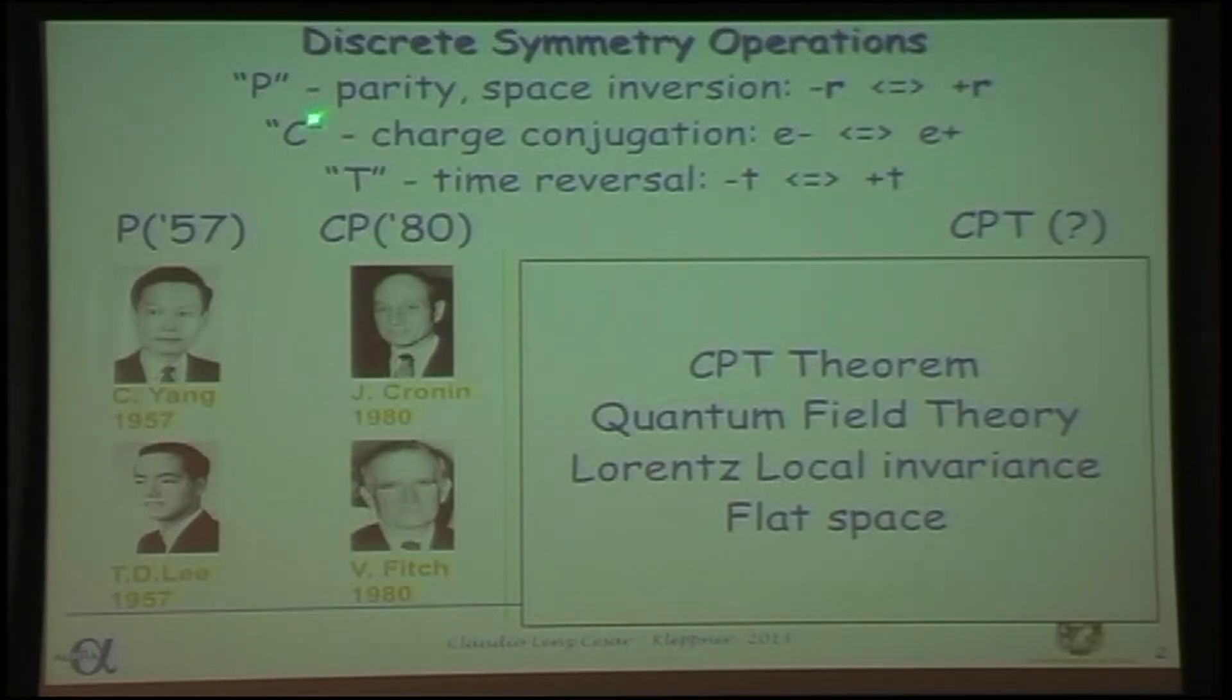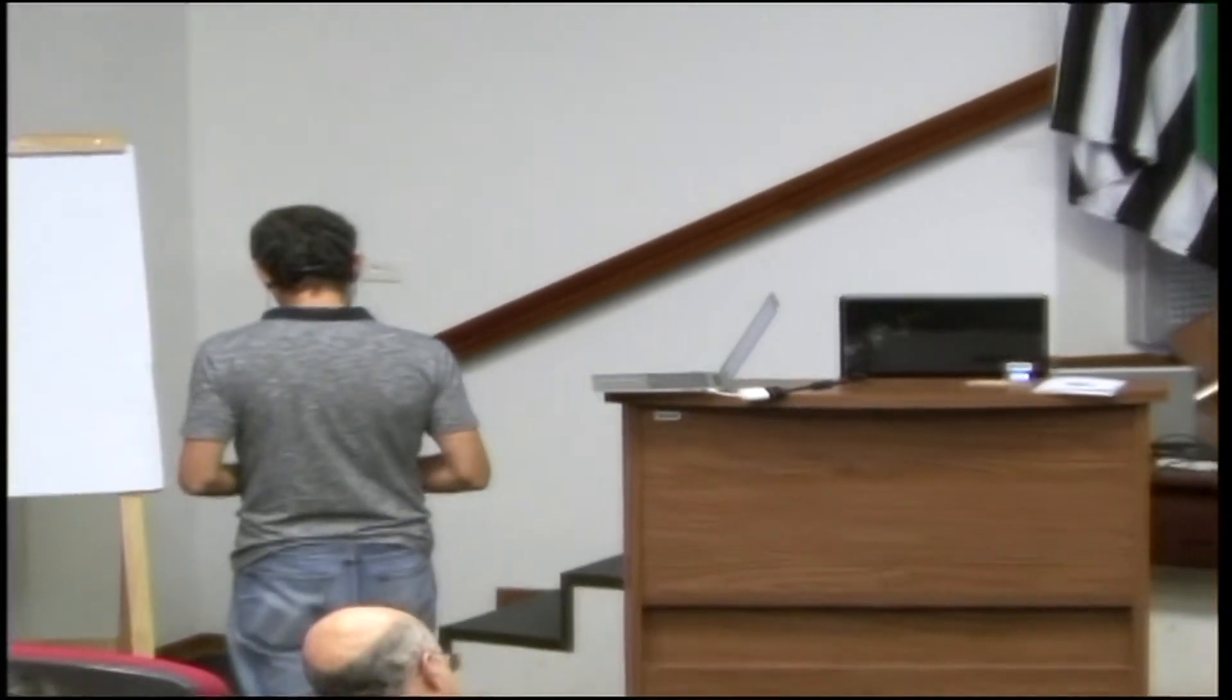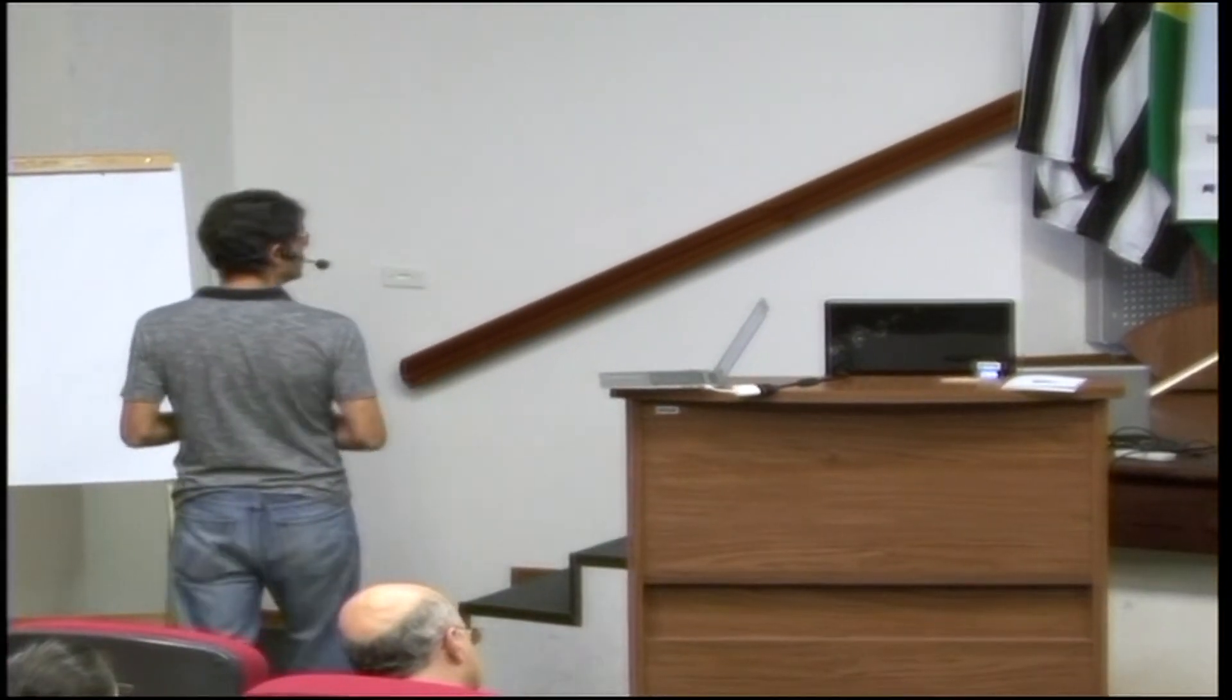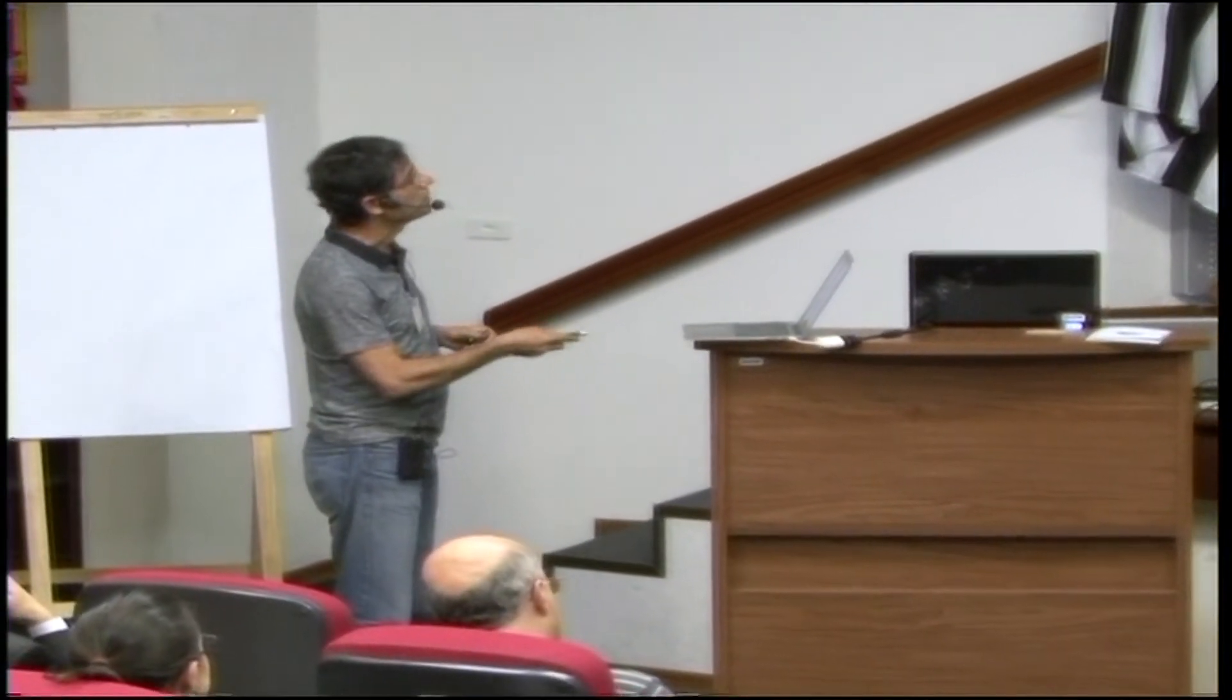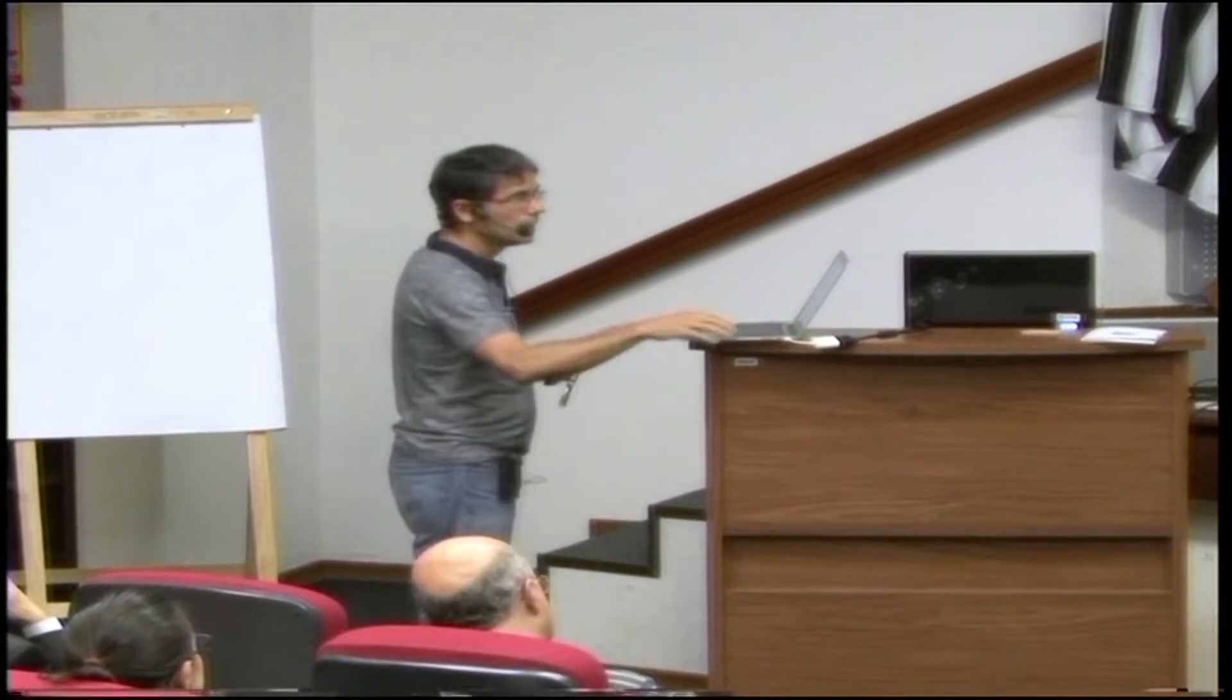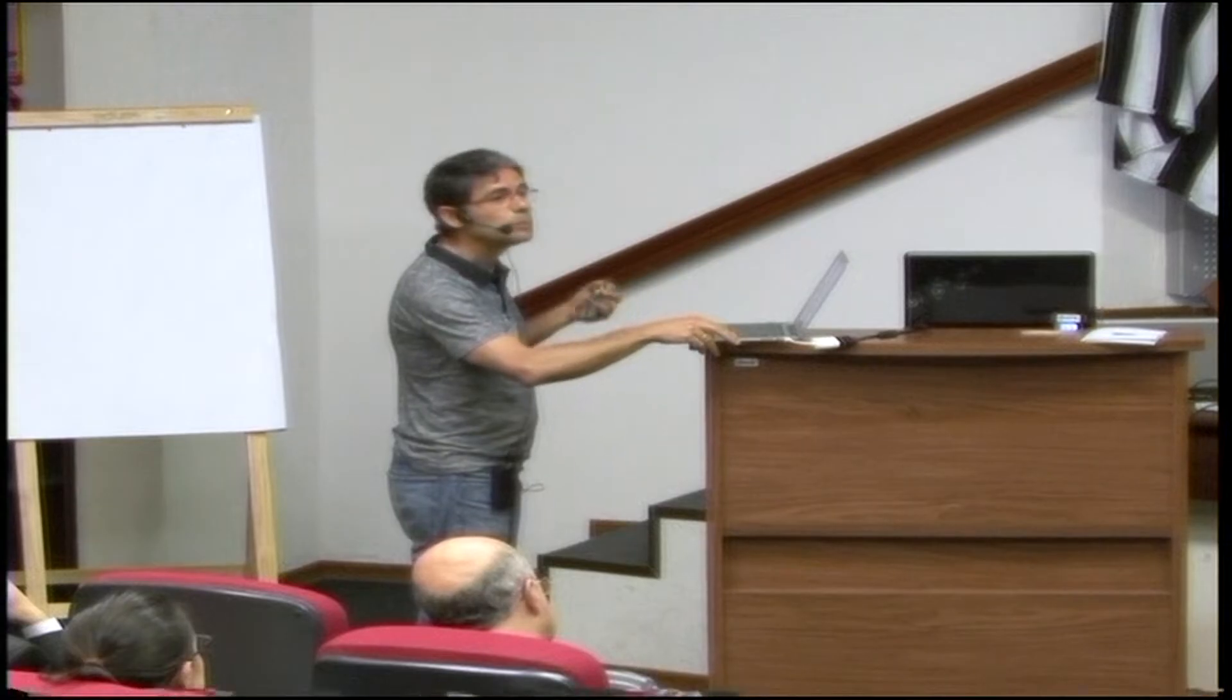Well, afterwards, it was proposed that if you use a charge conjugation together with parity, then that would be a good symmetry of physics. And we all know the story. Cronin and Fitch got the Nobel Prize for the K-On asymmetry. So our world seems to produce more particles than antiparticles. Finally, if we do all three of these discrete symmetries - parity, charge conjugation, and time reversal - then physics is believed to be invariant. It is a CPT theorem. This is the basis of quantum field theory, the standard model. And there is a theorem proven in flat space. So is CPT really a good symmetry? That's a big question.